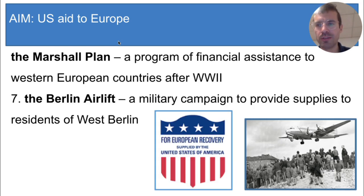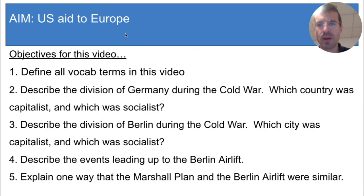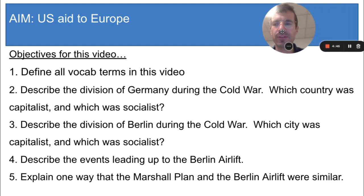Okay, let's recap. What did these two events, the Marshall Plan and the Berlin airlift, have in common? First, they both provided aid to people in Europe — the Marshall Plan provided money, and the Berlin airlift provided supplies like food and coal. Second, both events represent tactics that the U.S. used to fight the Cold War without using any actual fighting or violence. And now it's time to review the objectives. If you don't know the answer to any of them, just rewind the video and look again. I will see you in class.